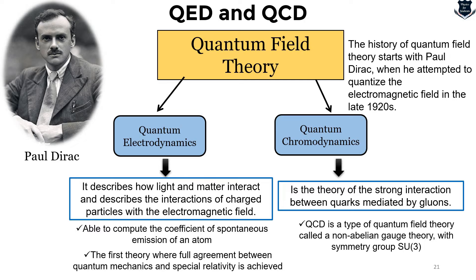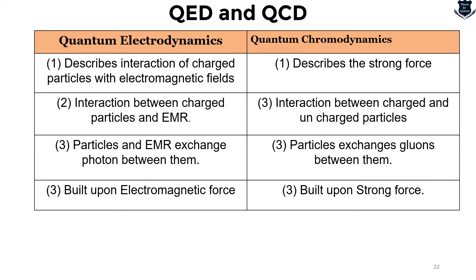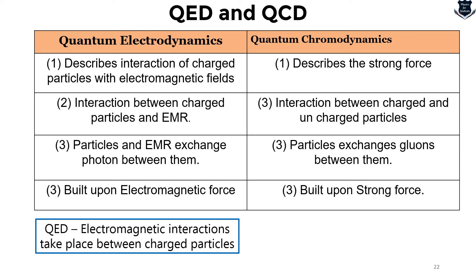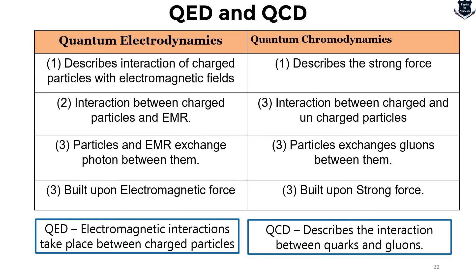The history of quantum field theory actually starts with Professor Paul Dirac, when he attempted to quantize the electromagnetic field in the late 1920s. In a quick comparison: QED describes the interaction of charged particles and electromagnetic radiation, where particles exchange photons; QCD describes the strong force interaction between quarks and gluons. QED is built upon electromagnetic force; QCD is built upon the strong force.